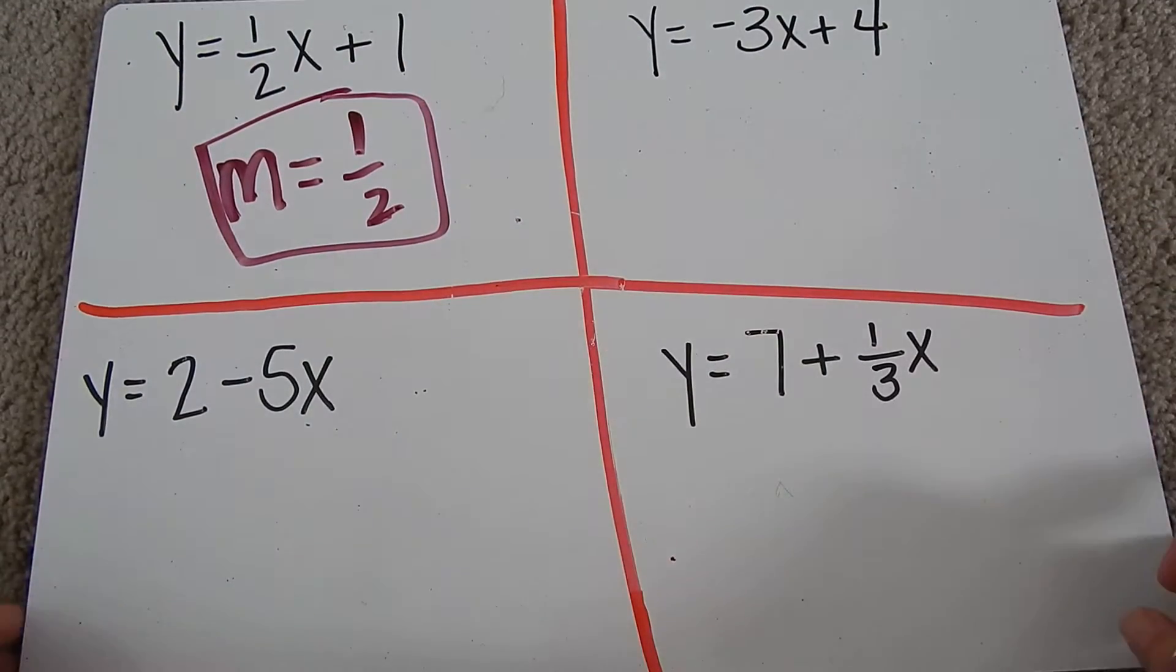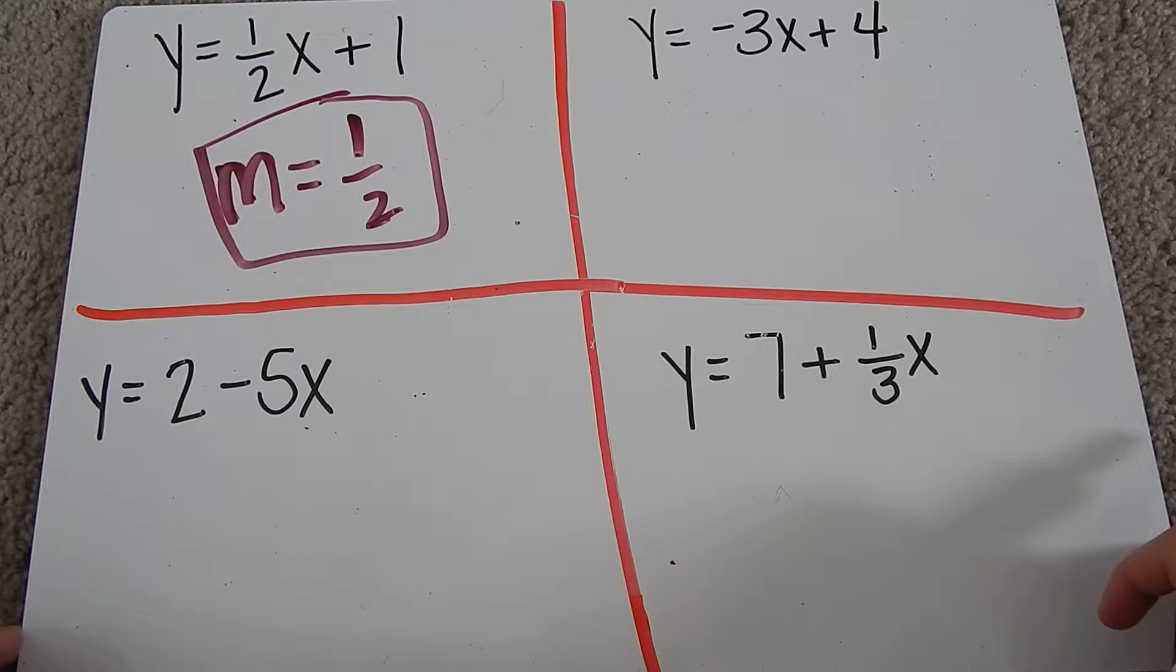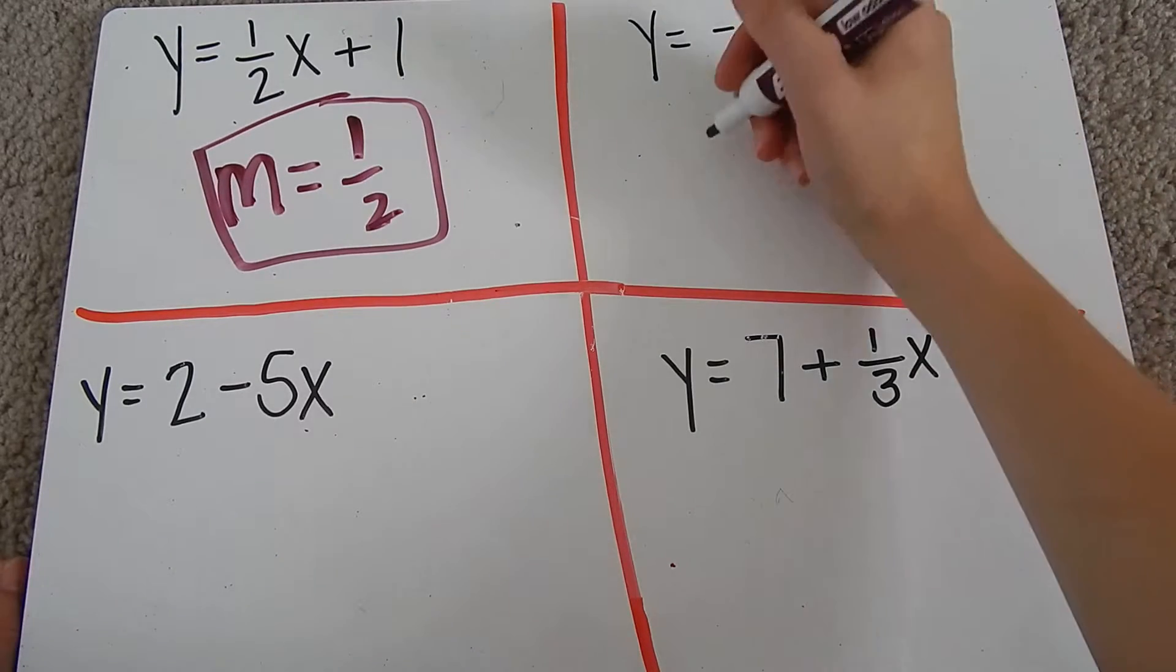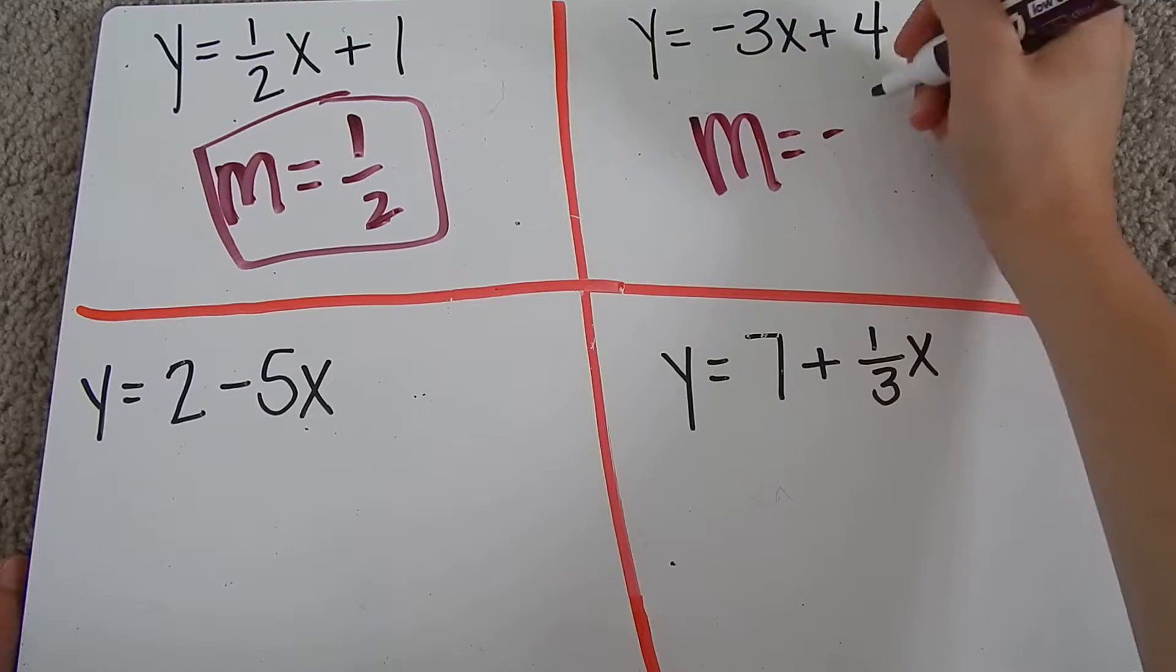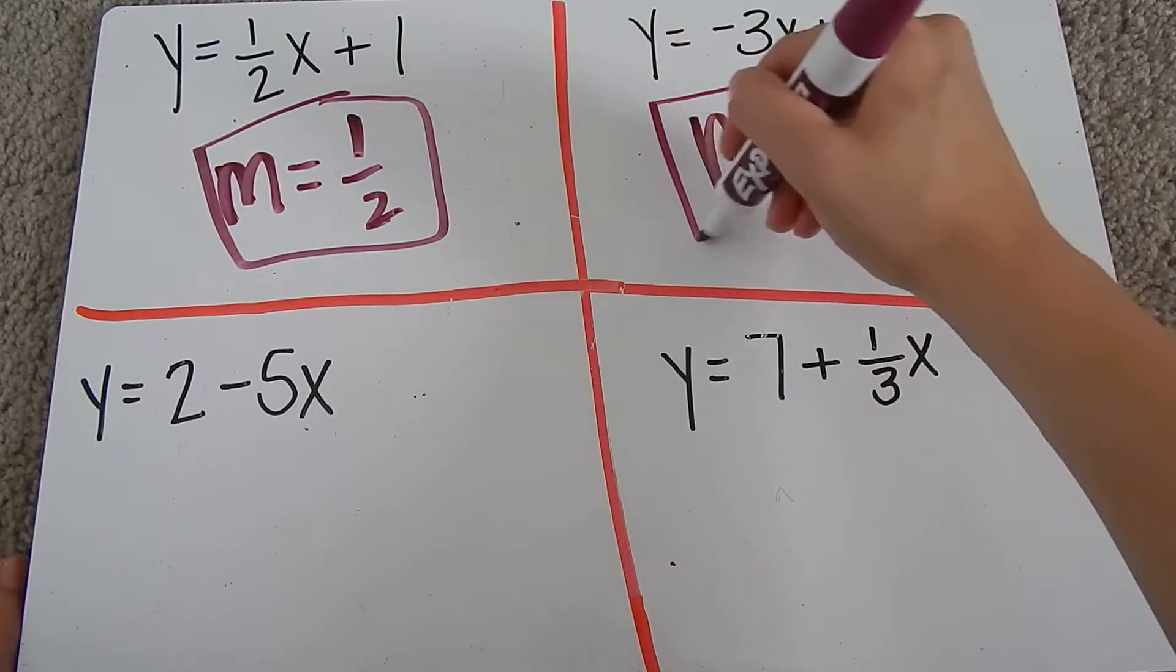In my second equation here, I have y equals negative three x plus four. Again, we have y by itself, so we have our slope-intercept form, and my m here is negative three, just whatever number is attached. Notice how I took the sign with it.